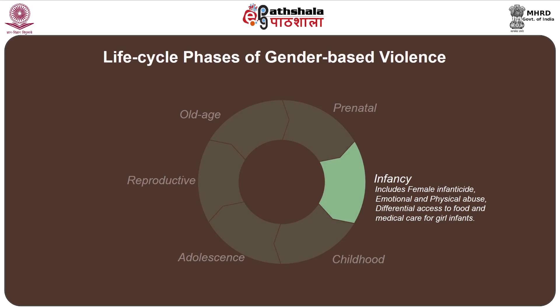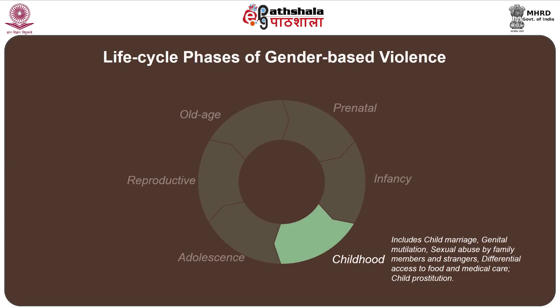The second phase, infancy, includes female infanticide, emotional and physical abuse, and gender-differential access to food and medical care for girls and infants. The third phase, childhood, includes child marriages, genital mutilation, sexual abuse by family members and strangers, differential access to food and medical care, and child prostitution.